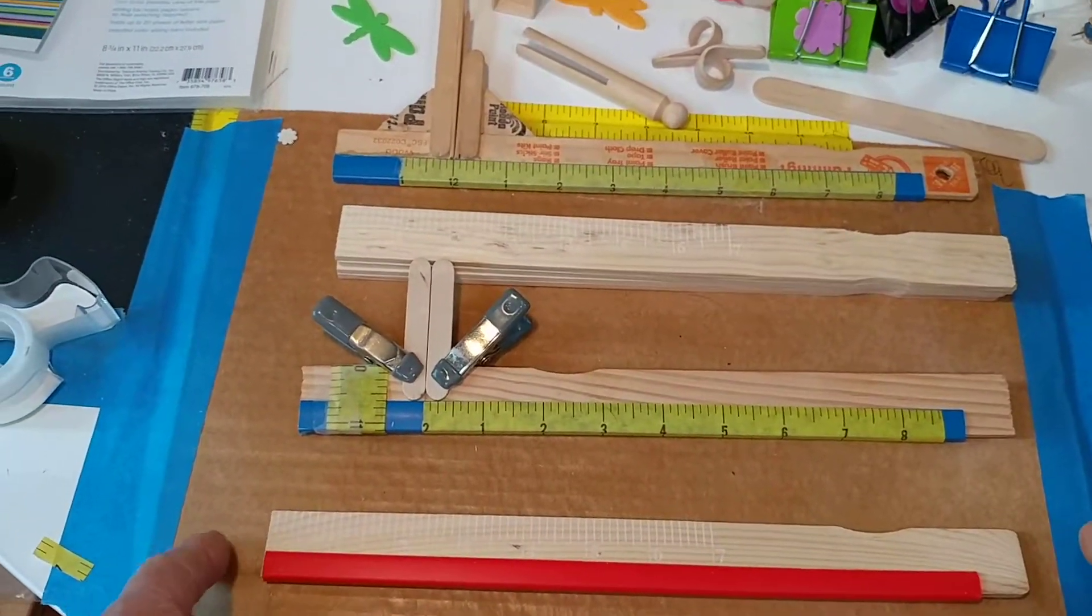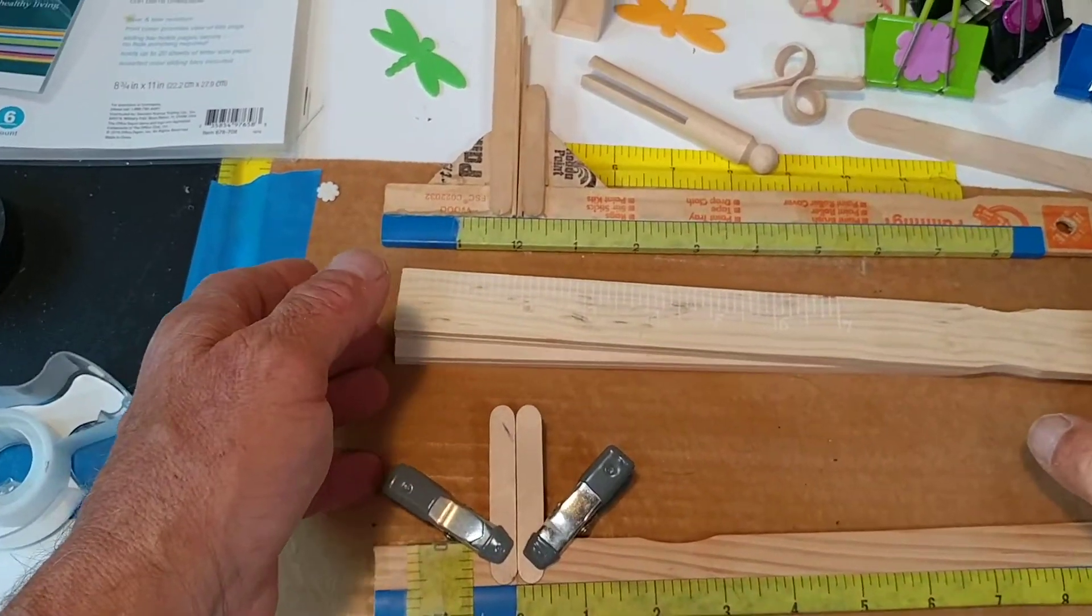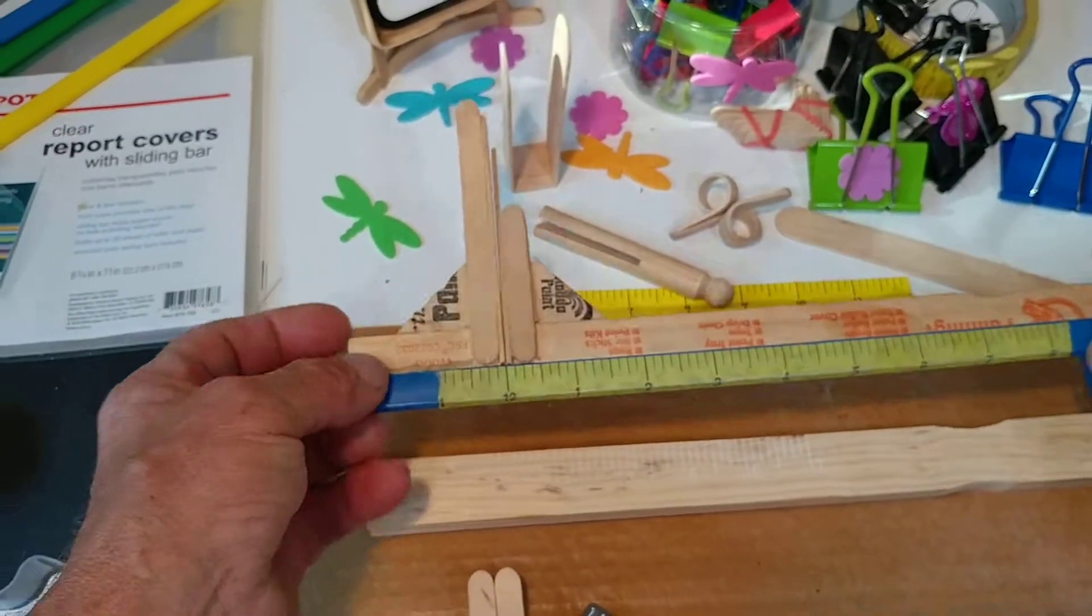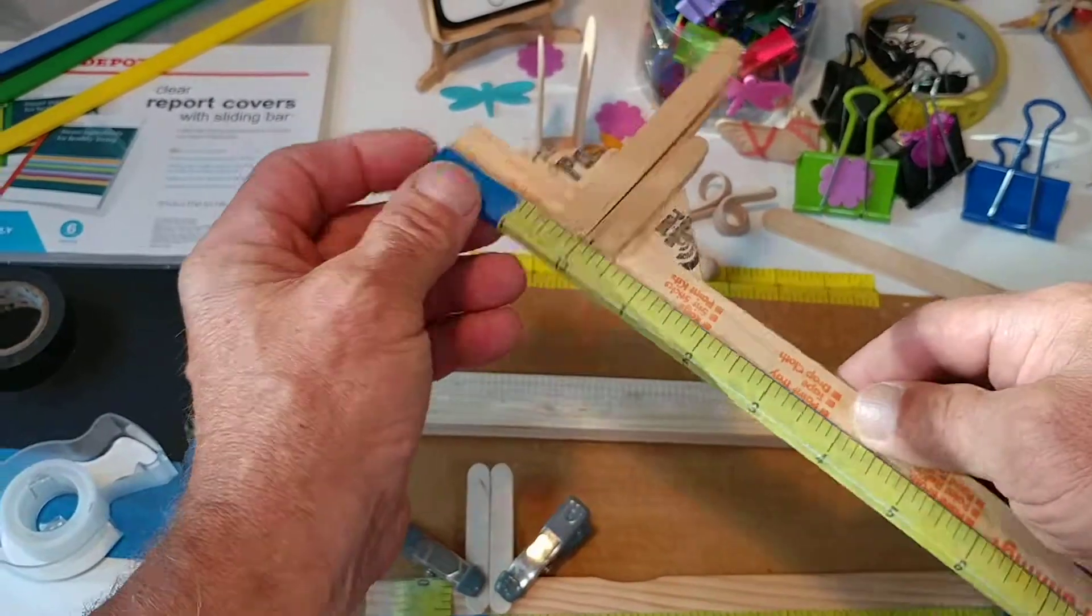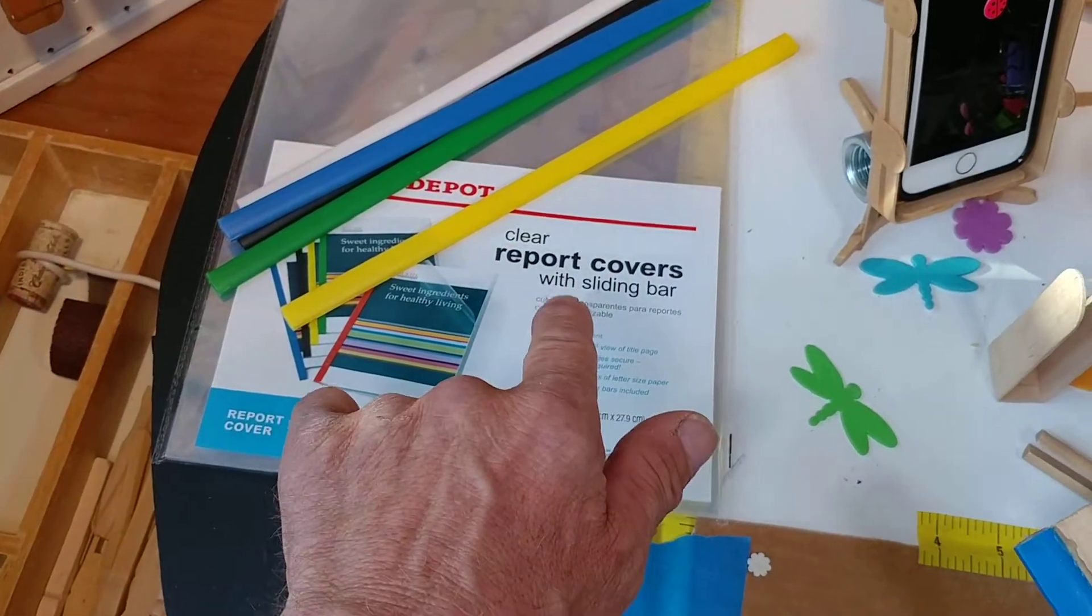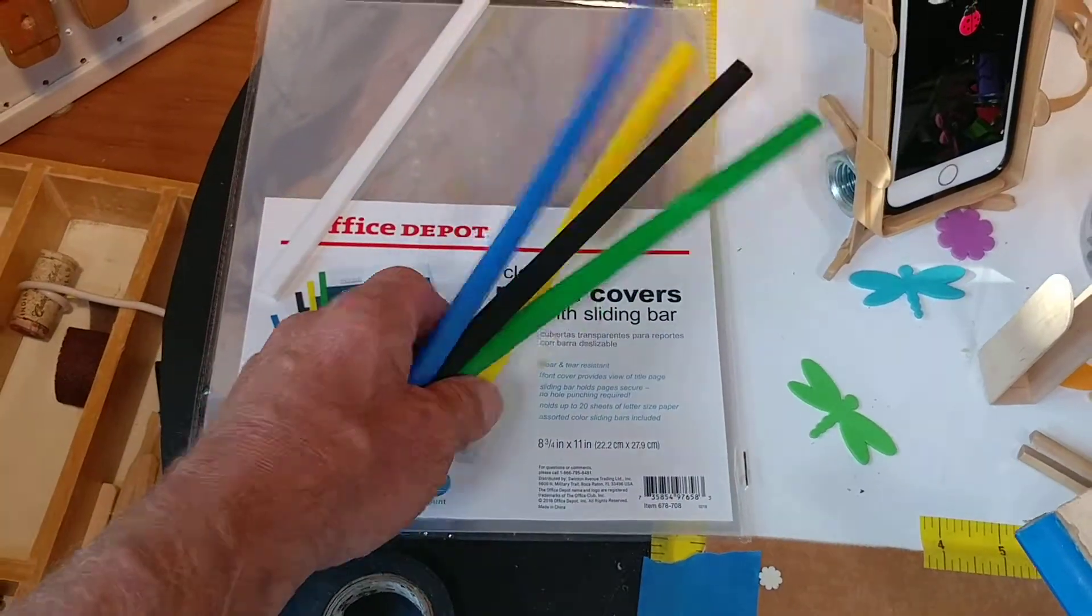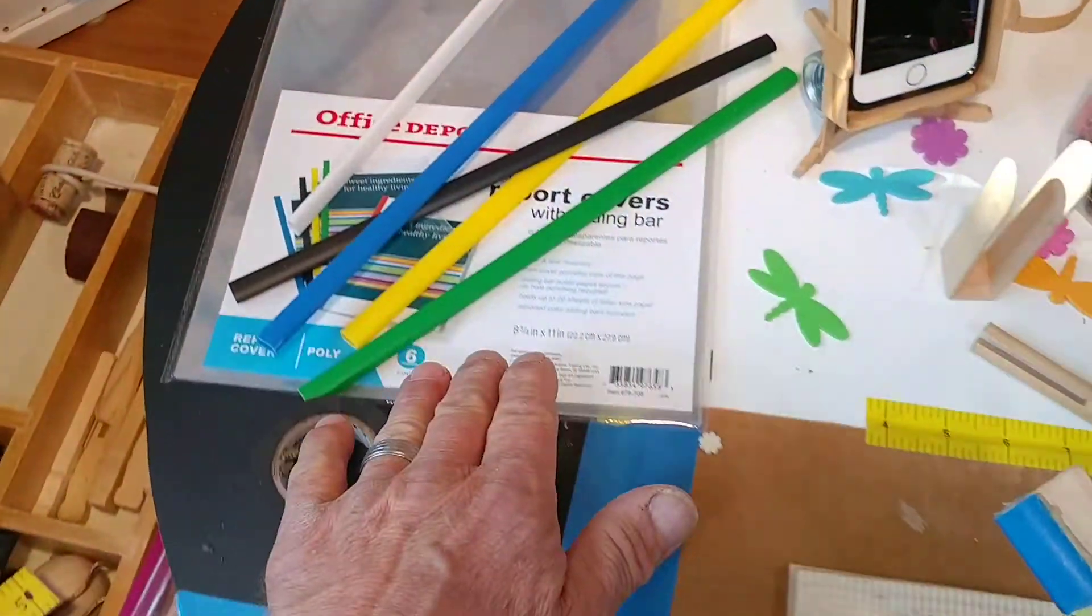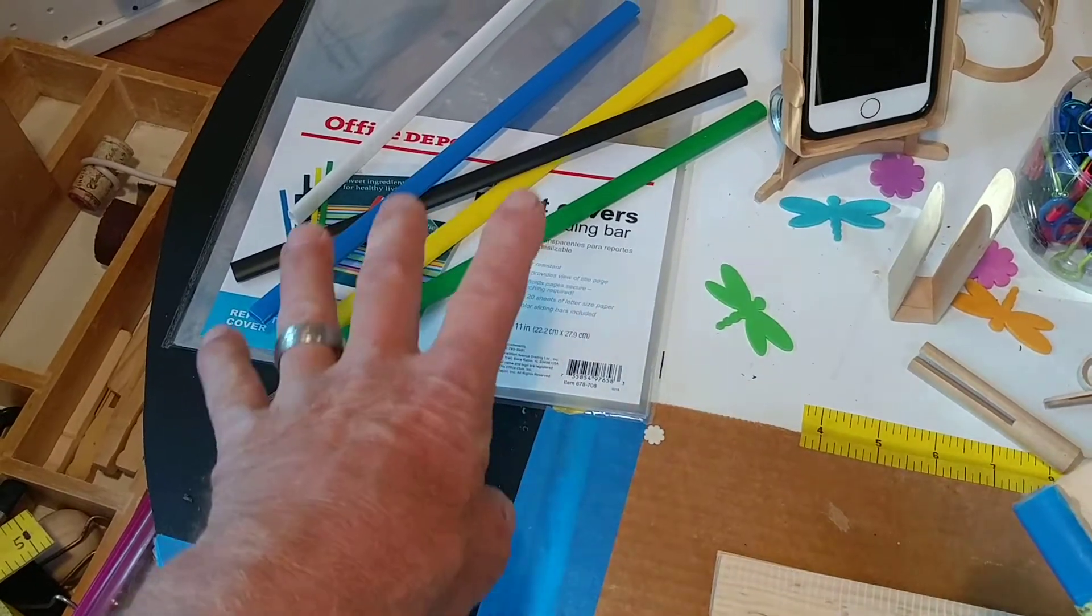This morning we're adding to the caliper tool category. This plastic is a report cover with slide bar. It comes in a bunch of colors, about $4 for a pack.